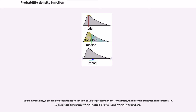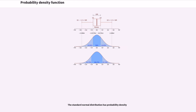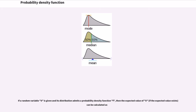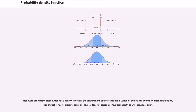For example, the uniform distribution on the interval [0, 1/2] has probability density f equals 2 for 0 ≤ x ≤ 1/2 and f equals 0 elsewhere. The standard normal distribution has a well-known probability density. If a random variable X is given and its distribution admits a probability density function f, then the expected value of X can be calculated as the integral of x·f(x) dx.